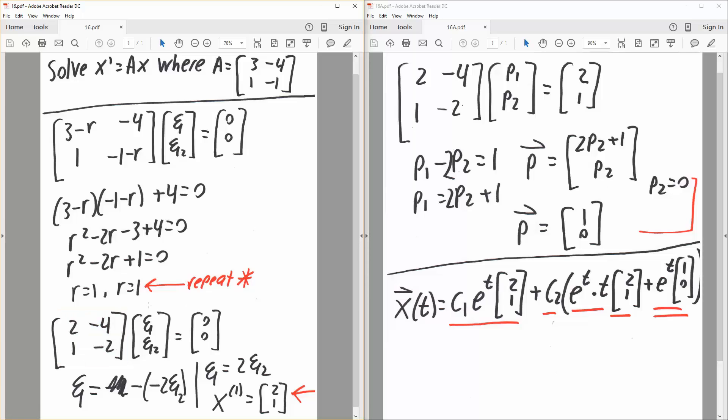But instead of v1, v2, we say p1, p2 is equal to this eigenvector. Not 0, 0, but this eigenvector here. So 2, 1.